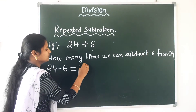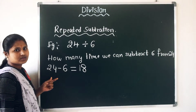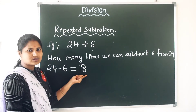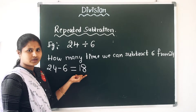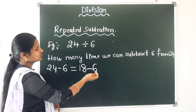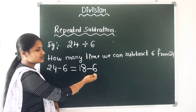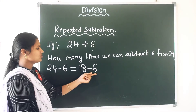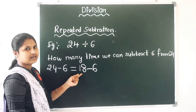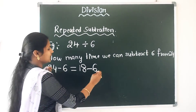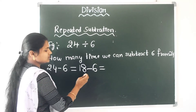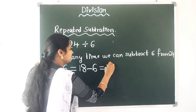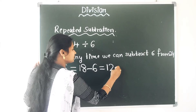24 minus 6 — how much? 18. So here 18 mangoes are left. Now I am subtracting 6 mangoes from 18. So 18 minus 6 — how much? This is 12.